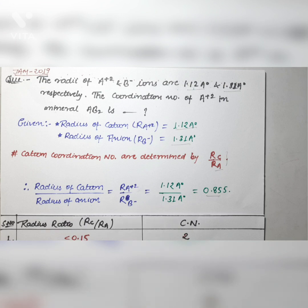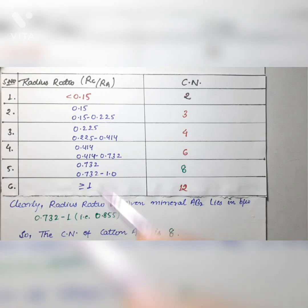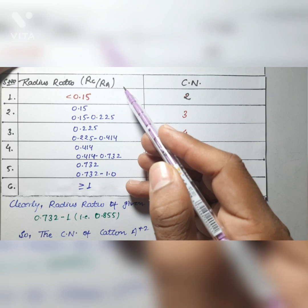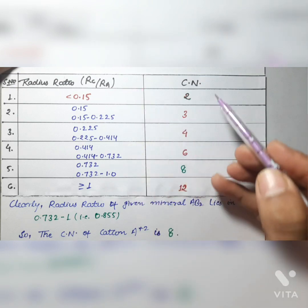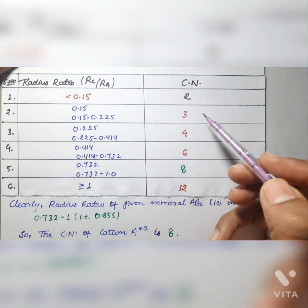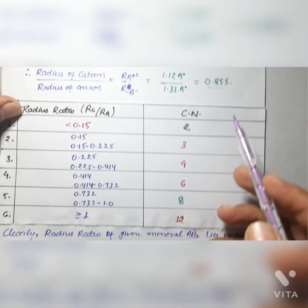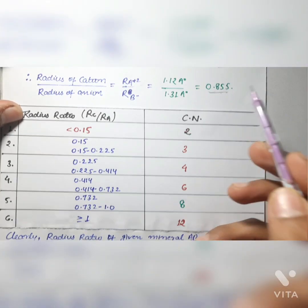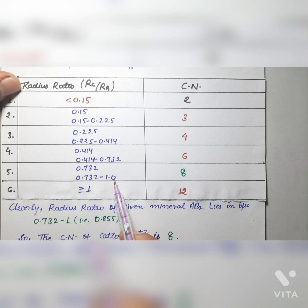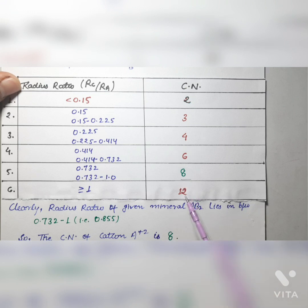After calculating the radius ratio, you refer to a table where one column shows the radius ratio range and the other shows the corresponding coordination number of the cation. Since the radius ratio in this question is 0.855, it falls under the range 0.732 to 1.0. The corresponding coordination number of the cation is 8. So the coordination number of A²⁺ in mineral AB₂ is 8.